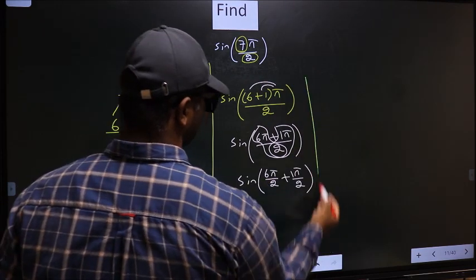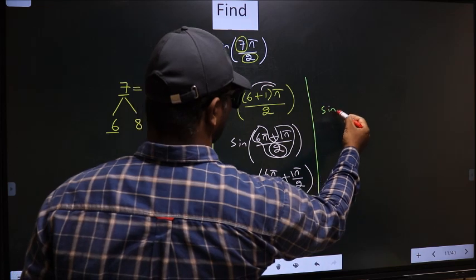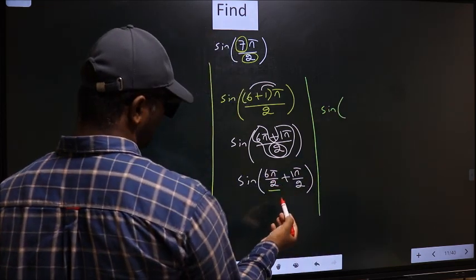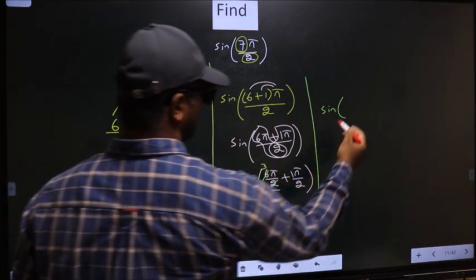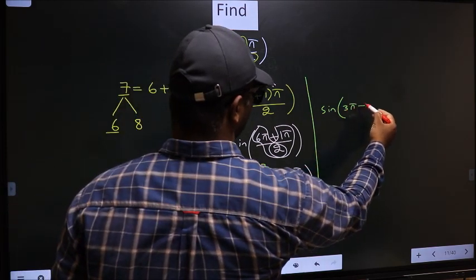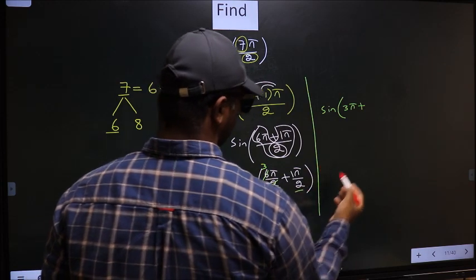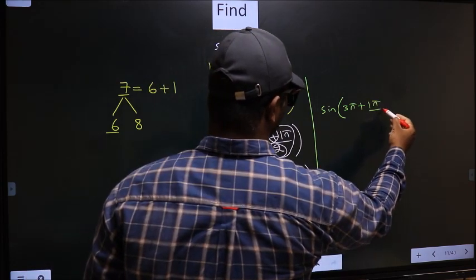Next. Sine. Now here you should simplify, 2 into 3 is 6. So we get 3π + 1π/2.